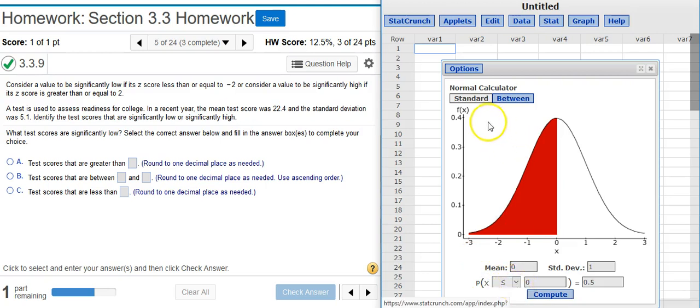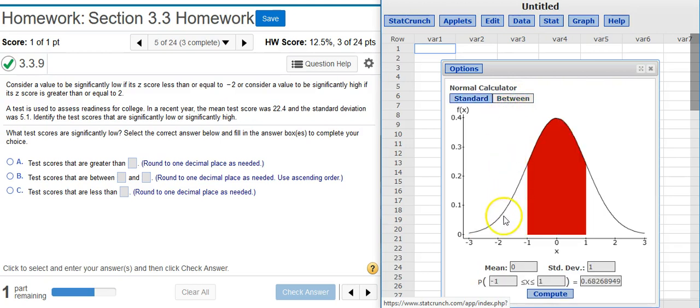What we want to do first is, since we're dealing with scores that are significantly low and scores that are significantly high, I'm going to take this Between option up here at the top of the calculator. That way, the scores that are significantly low are here in the left tail of my distribution, and the ones that are significantly high will be in the right tail.